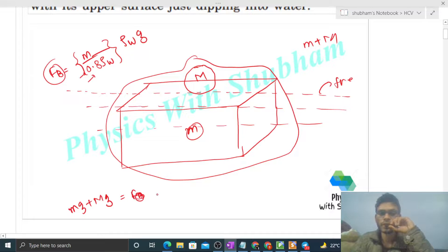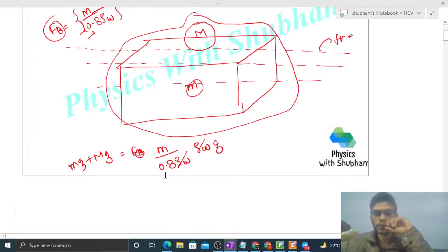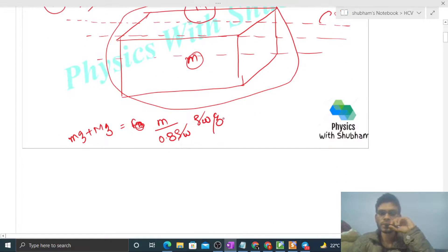Now we can put the value of buoyancy force, that is mass upon 0.8 into rho w into density of water into g. So here density of water cancels out, and further g also cancels out in this way.